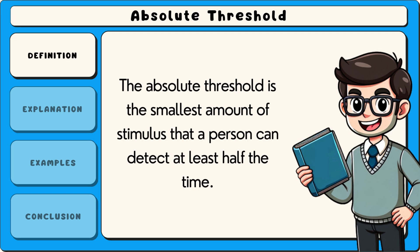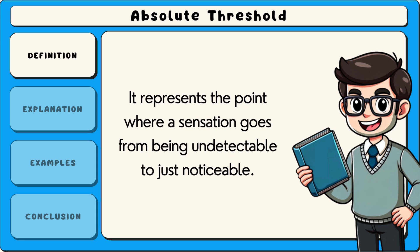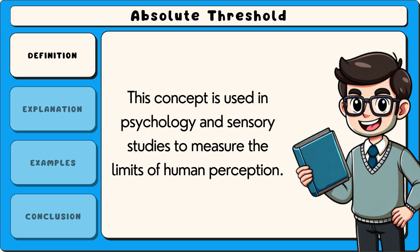The absolute threshold is the smallest amount of stimulus that a person can detect at least half the time. It represents the point where a sensation goes from being undetectable to just noticeable. This concept is used in psychology and sensory studies to measure the limits of human perception.